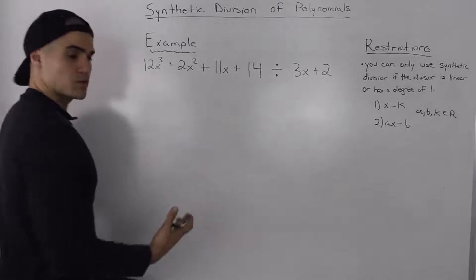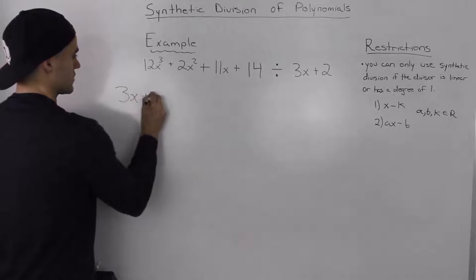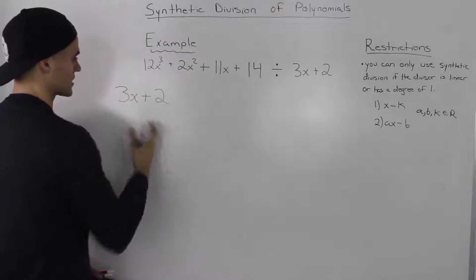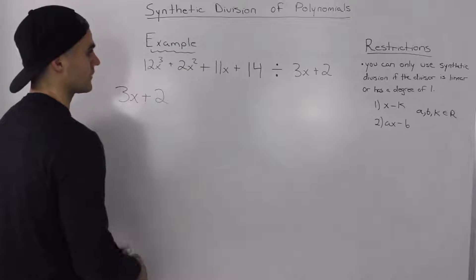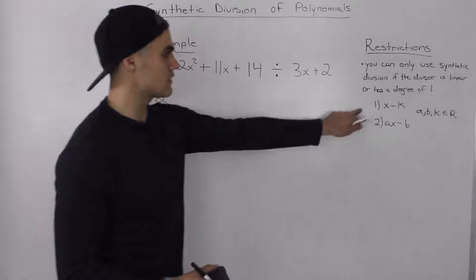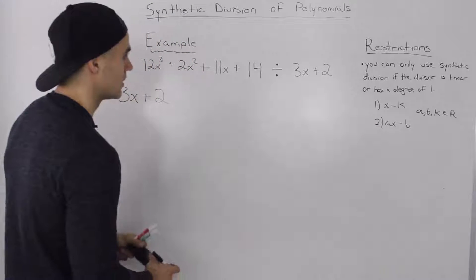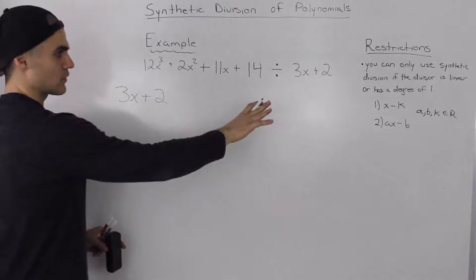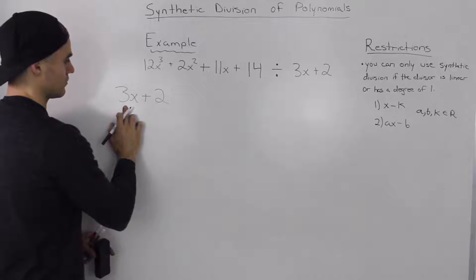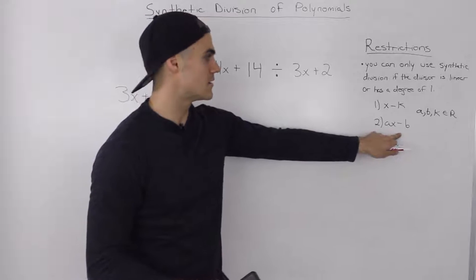The first thing we always check with synthetic division is: is the divisor — in this case 3x plus 2 — linear? And it is. 3x plus 2 is a line; it has a degree of 1. The next thing we check is does it take either the form of x minus k, or ax minus b? Well, it doesn't take the form of x minus k because there's this constant 3 in front, so it takes the form ax minus b.